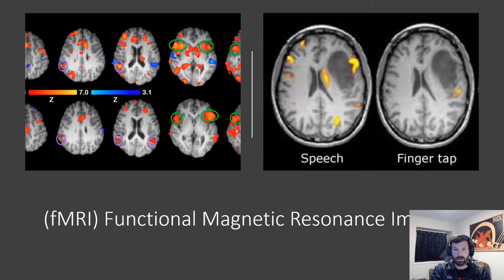The fMRI is great. It is really expensive, but it's a great way of seeing what is going on within the brain by studying blood flow — where the blood is going — and measuring that to allow us to see what's happening.